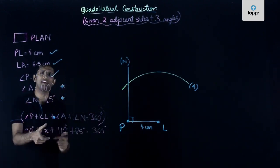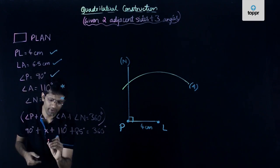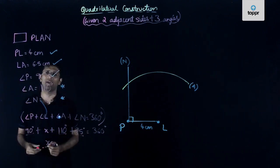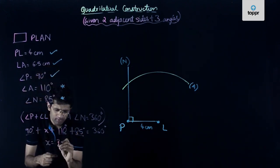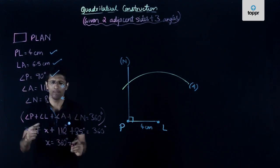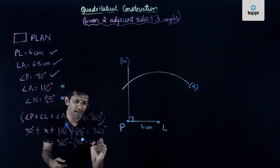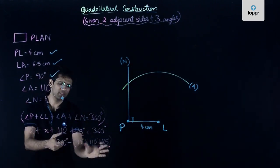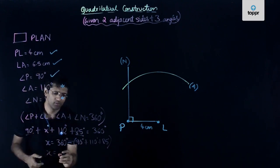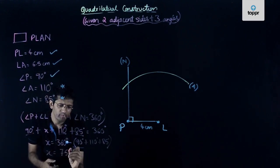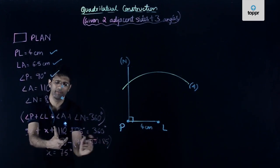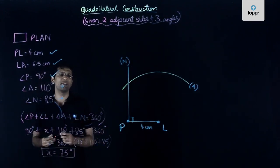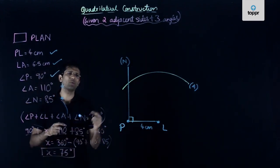From this equation, we can find the value of X. The value of X is 360 minus (90 plus 110 plus 85). Solving this, we get X equals 75 degrees. So the measure of angle L is 75 degrees, and now the question should be easy to solve.